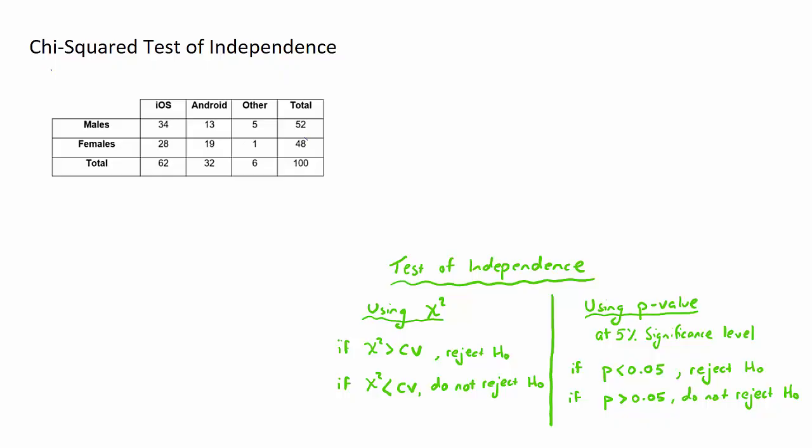In order to test it we need to define what is called the null hypothesis, which we denote as H0. And the null hypothesis is always that the two variables are independent. So in this case here, gender is independent of preferred operating system.